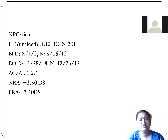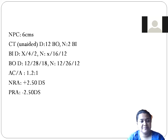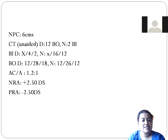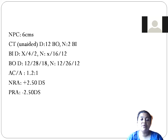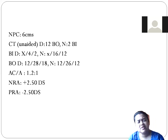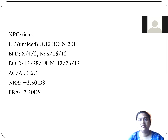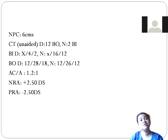The NPC is 6 centimeters, which is very good — 6 to 7 centimeters is considered normal. On cover test for distance, there is 12 prism diopters base-out, meaning 12 prism diopters of esophoria. At near, there is only 2 prism diopters base-in, indicating a very small amount of exophoria, which is manageable. But at distance, there is 12 prism diopters of esophoria.